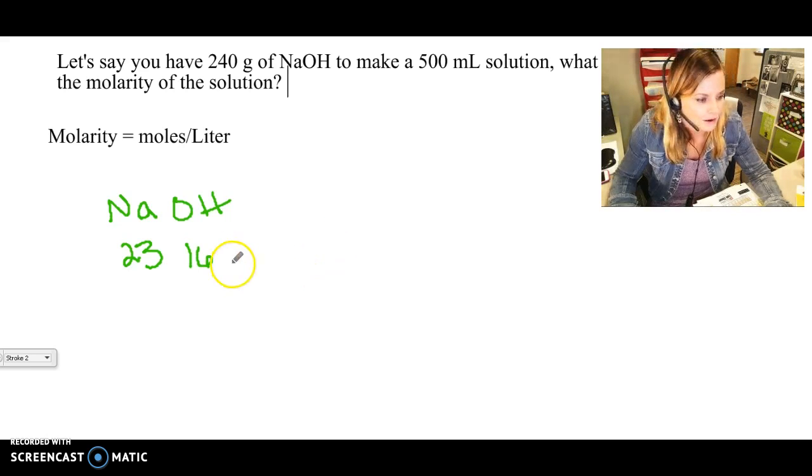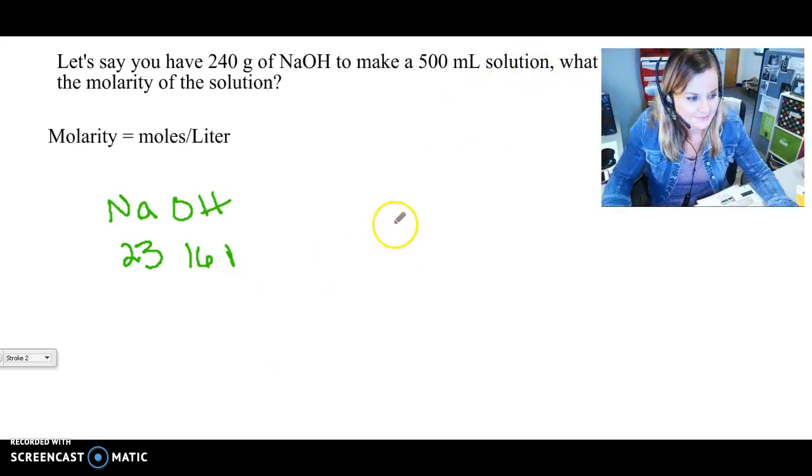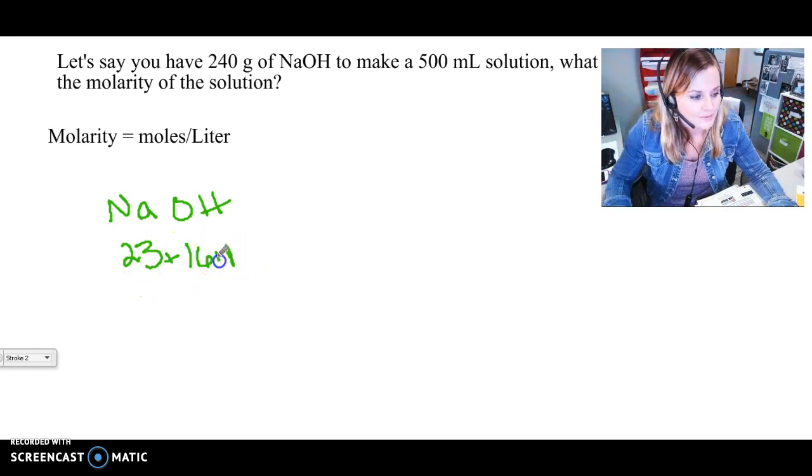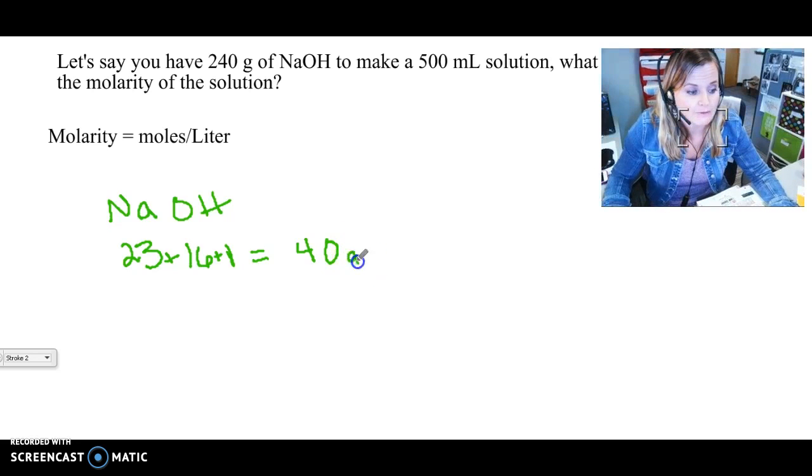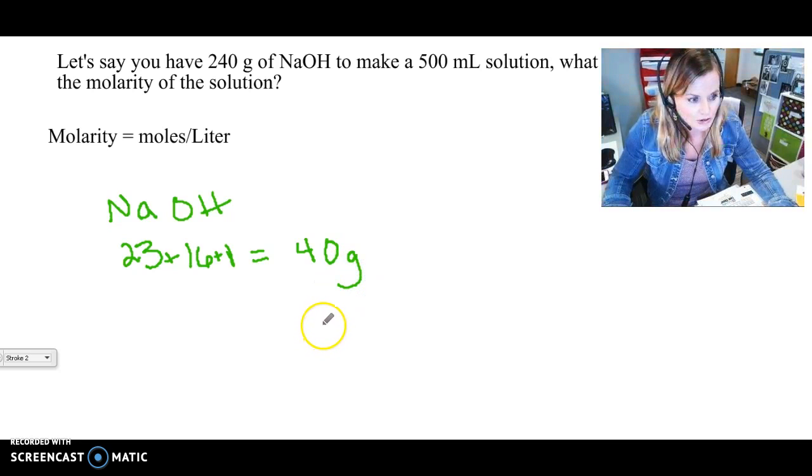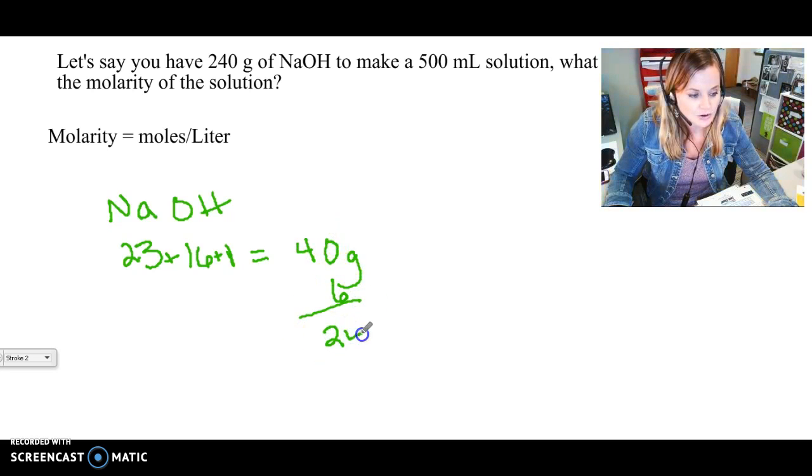So then if you add these numbers together you get 40. So one mole of sodium hydroxide would be 40 grams. Since I have 240 grams, how many moles is that? Well 40 times 6 is 240 right, so this means I'm gonna have six moles of sodium hydroxide.